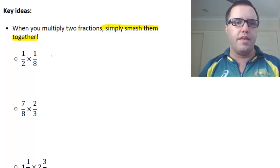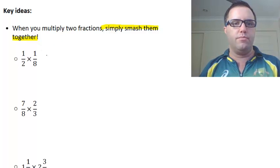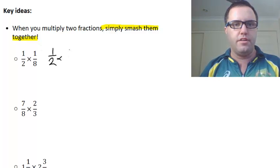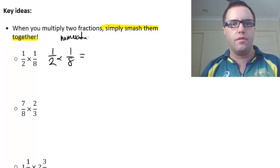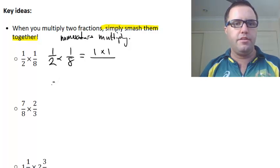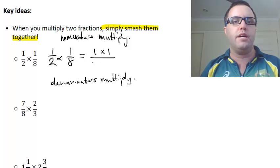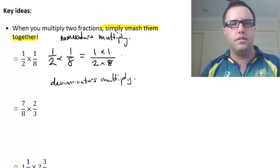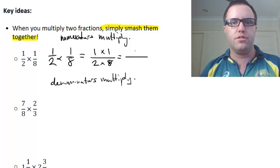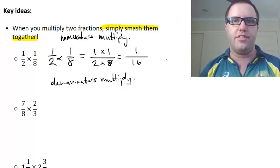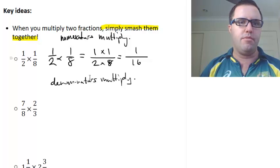So if we have here a half times an eighth, I'm going to rewrite that for you. A half times an eighth, we just smash these two together. We essentially get the numerators multiply together, so 1 times 1, and the denominators multiply. So 2 times 8, 1 times 1 is 1, 2 times 8 is 16, and we're left there. So that's how we go about our multiplication of fractions.